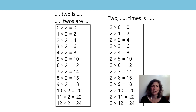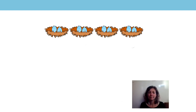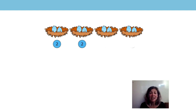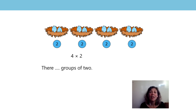Wow, you really know your 2 times table facts. Well done. Can you have a look at this picture now and tell me what you can see? Did you see 4 nests with 2 eggs in them? There are 2 eggs in each group — 4 groups of 2 eggs. There are 4 groups of 2. What's the product? That's right: 4 times 2 is equal to 8. 4 twos are 8. How else could I write the equation for this picture?